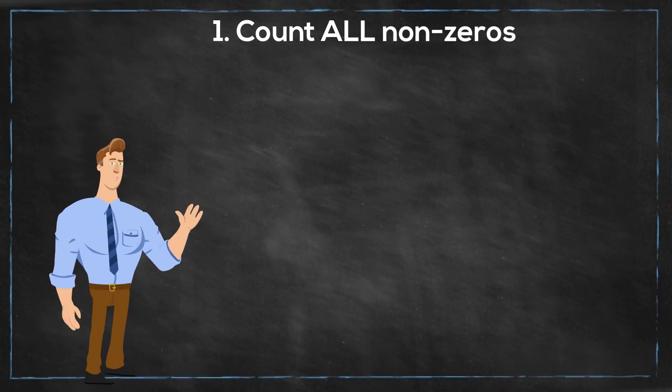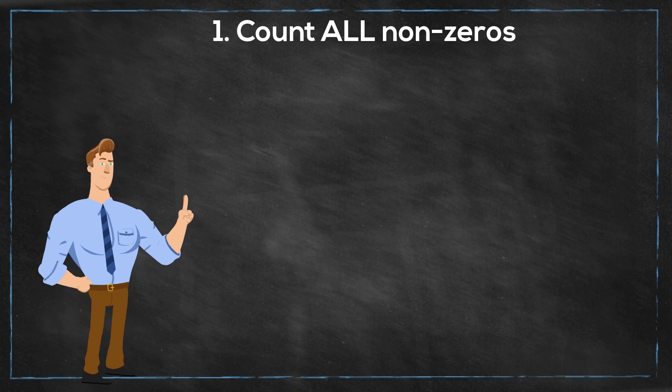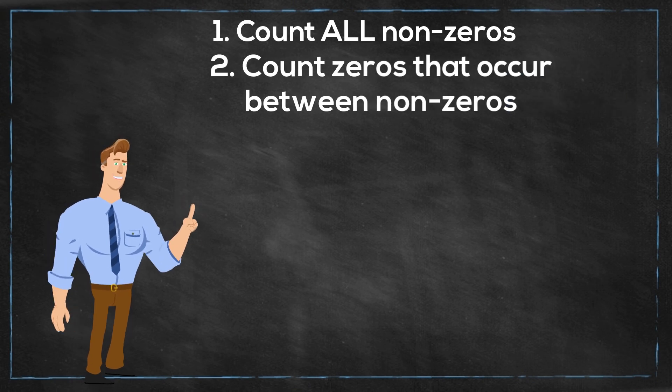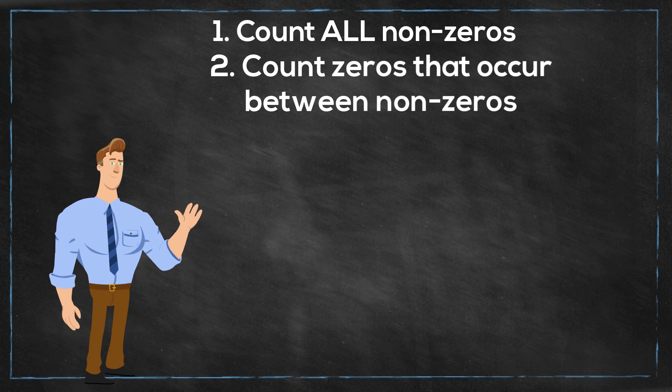First, count all non-zeros. Two, count zeros that occur between non-zeros. Three, and this trips up a lot of people,